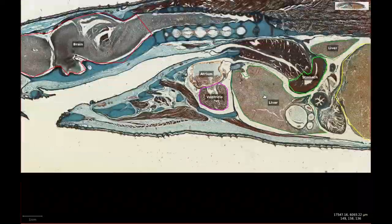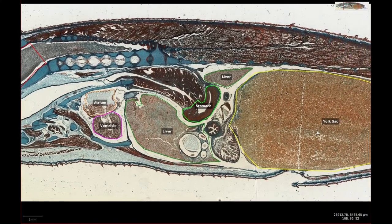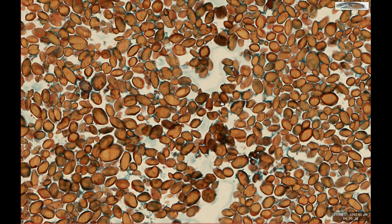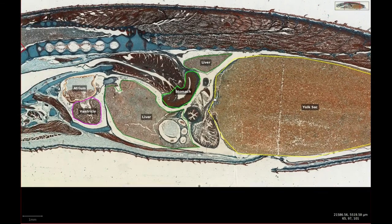Also in the coelomic cavity, we have a few round sections of intestine, but the dominating organ is this huge oval sac filled with yellowish globules. You might be tempted to identify these as red blood cells, but look a bit more closely and you'll see that they're not nucleated as red blood cells should be.